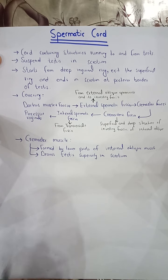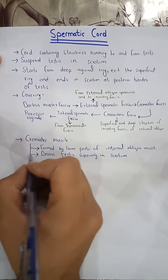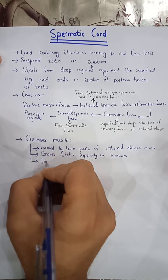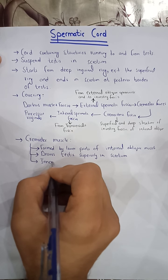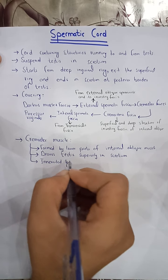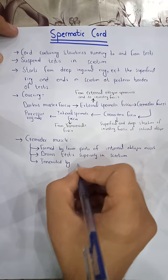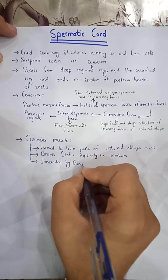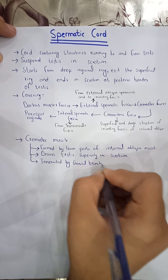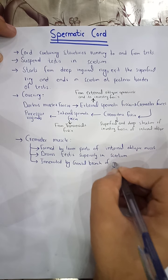The innervation of the cremaster muscle is via the genital branch of the genitofemoral nerve.